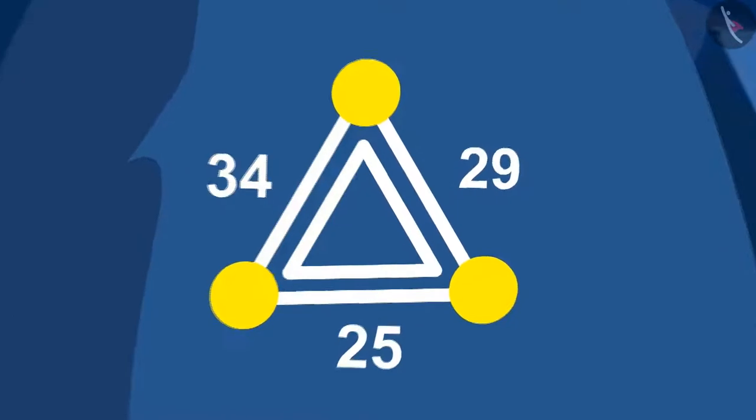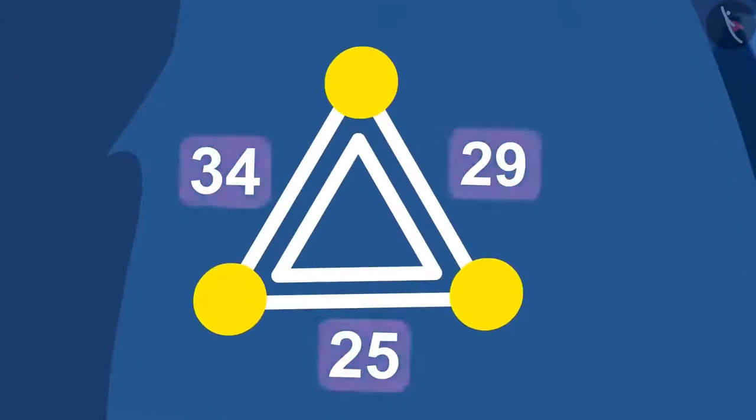Now, Tufan saw the numbers written on the side of the triangle. He noticed that on the side on which the number is 29, he can put the numbers 10 and 19 on two corners. And the side which has the number 34 written, he can put the numbers 19 and 15. In this way, Tufan put all the numbers in their correct places.